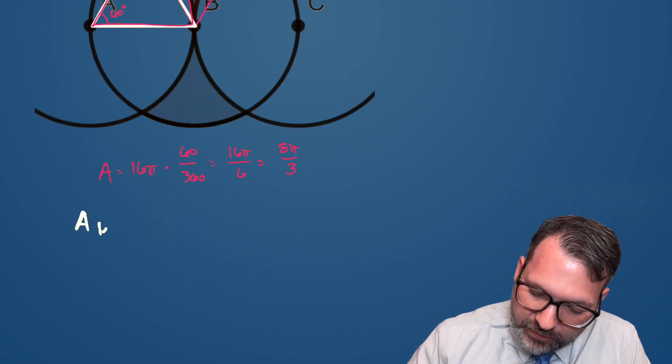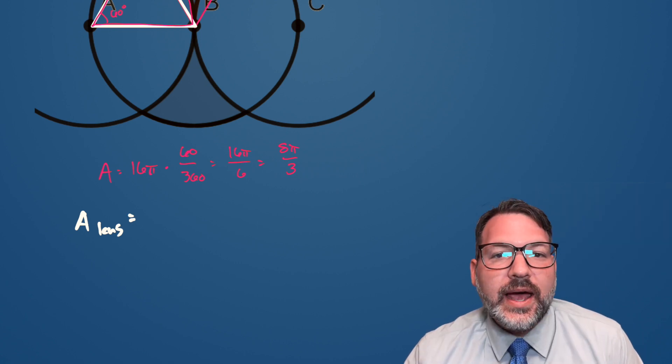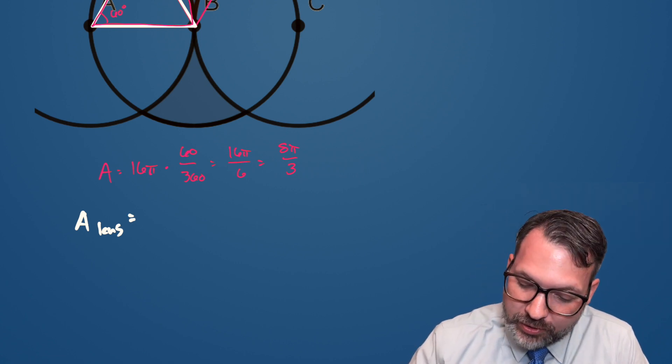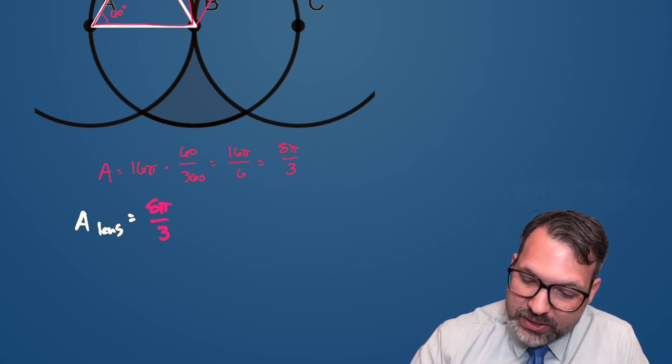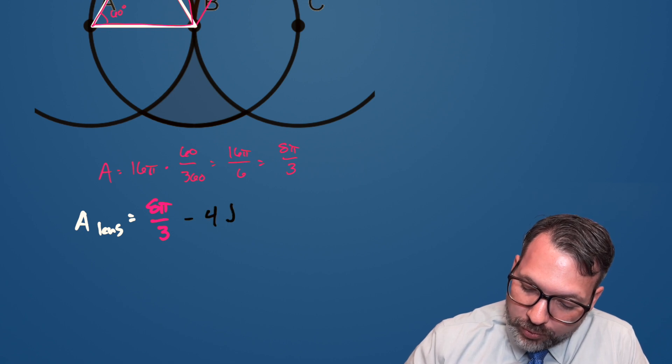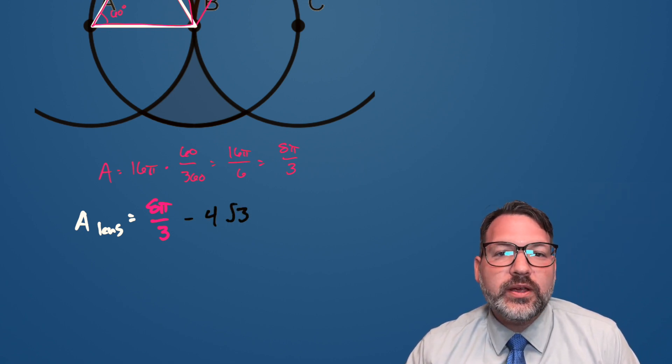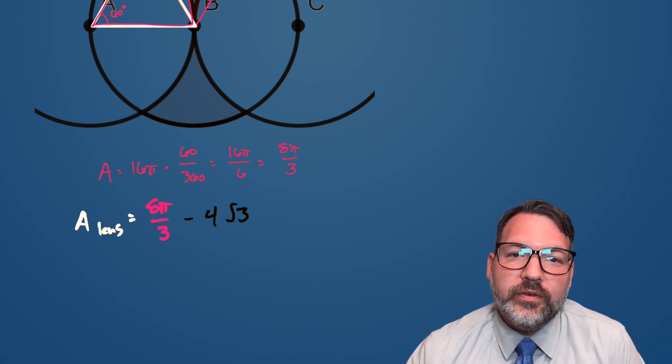Now again, the area of the lens that we're interested in is actually going to be that sector of the circle, 8π divided by 3, minus the equilateral triangle, which again we already found. We said that that area was 4√3, and now we have everything we need to be able to state the area of the shaded region.